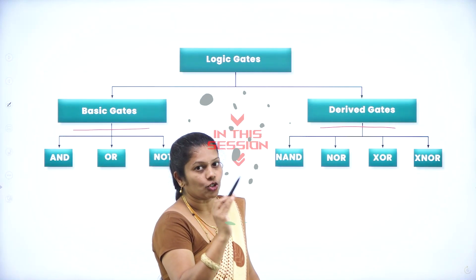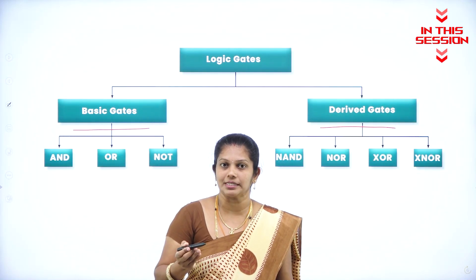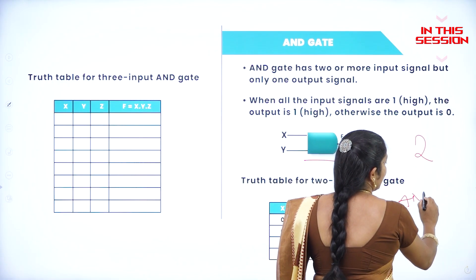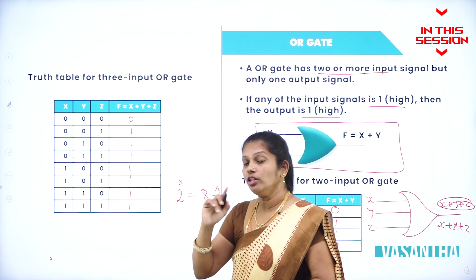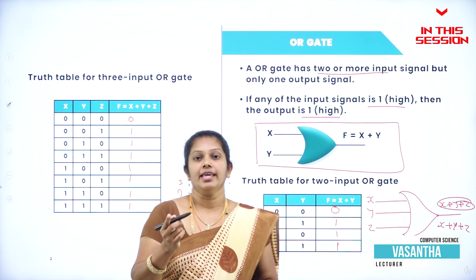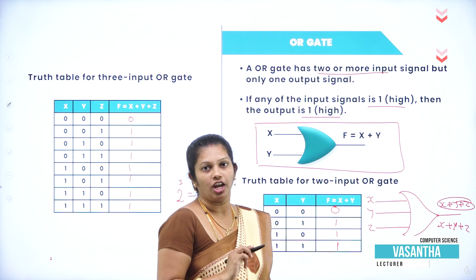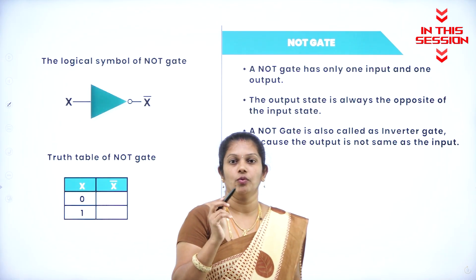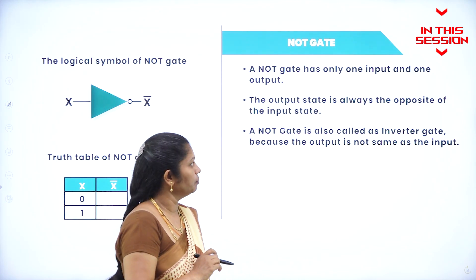A gate is simply an electronic circuit that takes one or more input signals while producing one output signal. In an AND gate, all the inputs have to be satisfied for the output to become one. In an OR gate, if any one of the inputs is true, the output becomes true. OR gate and AND gate require minimum two inputs, whereas the NOT gate takes only one input.